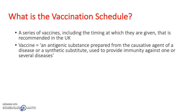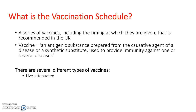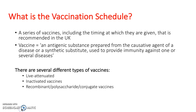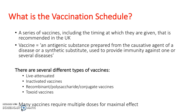As you can read here, the vaccination schedule is a series of vaccines and ages at which they are given. In some countries it is compulsory, but it is only recommended here in the UK. The idea of a vaccine is to provide immunity against one or several diseases by introducing an antigenic or synthetic substance into the body.